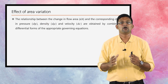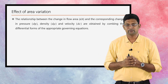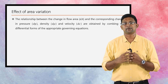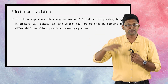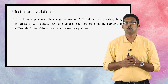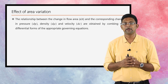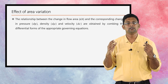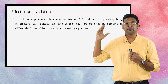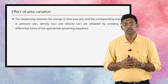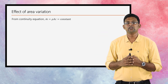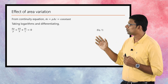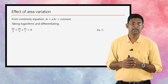Next, we are going to discuss the effect of area variation. In order to study the manner in which the area of a flow passage has to change to achieve expansion or compression — whether the entering fluid is subsonic or supersonic — it is necessary to understand the effect of area variation on flow parameters. The relationships between the change of flow area dA and the corresponding changes in pressure dP, density dρ, and velocity dC are obtained by combining the differential forms of the governing equations. Let us start with the continuity equation: ṁ = ρAC = constant. Taking logarithms and differentiating, we obtain dρ/ρ + dA/A + dC/C = 0. This is equation 1.